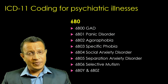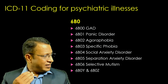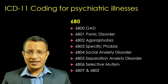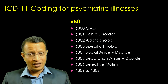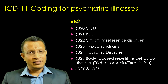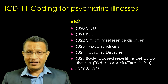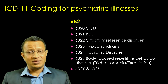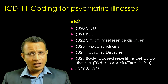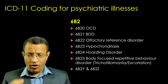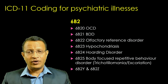Moving to 6B, which is for anxiety disorders. It starts with generalized anxiety disorder, panic disorder, agoraphobia, specific phobia, social anxiety disorder, separation anxiety disorder, and selective mutism. However, OCD has been moved out and comes into 6B2 — covering OCD, body dysmorphobia, olfactory reference syndrome, hypochondriasis, hoarding disorder, and body-focused repetitive behavior disorders like trichotillomania and excoriation. Again, Y is not otherwise specified and Z is unspecified.